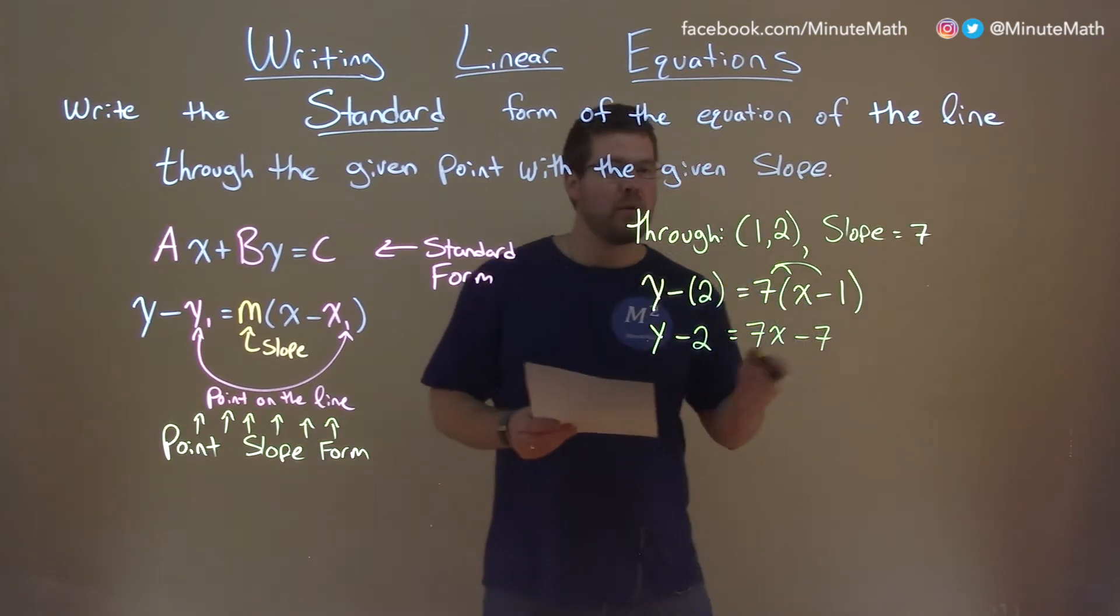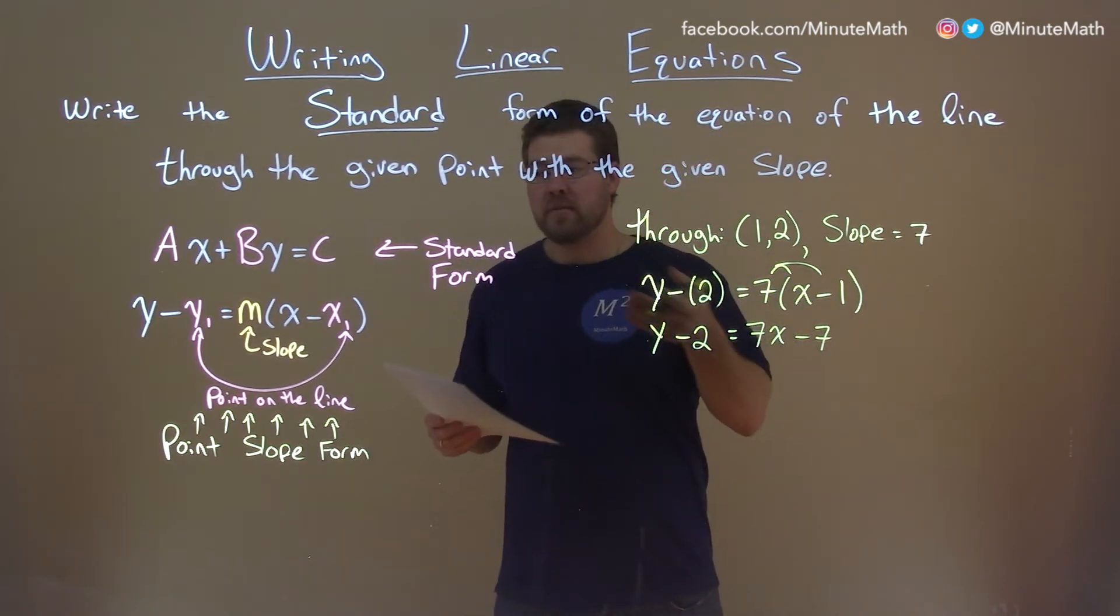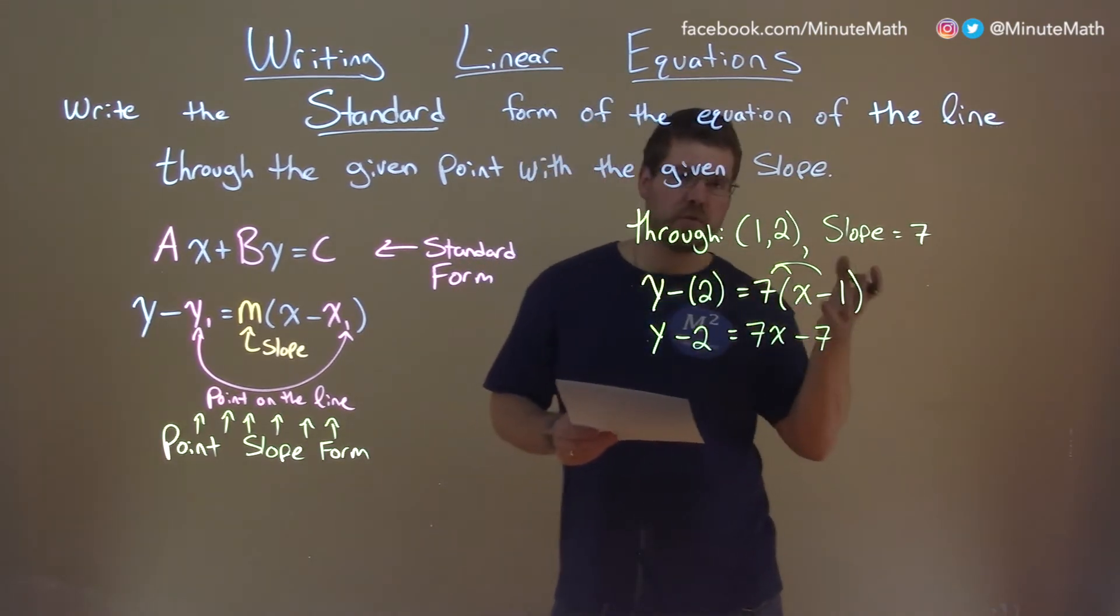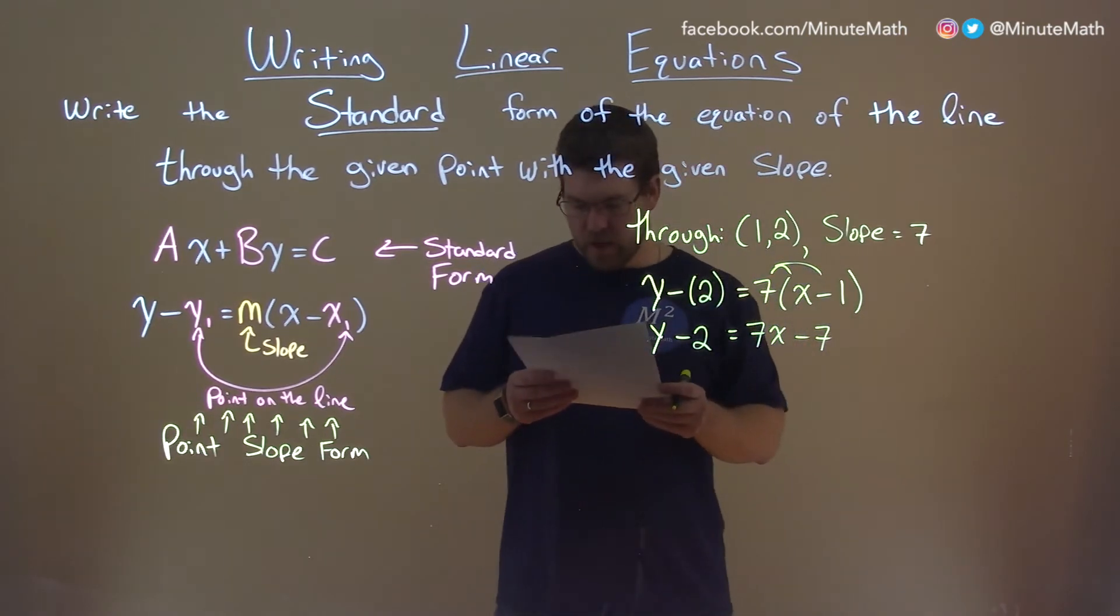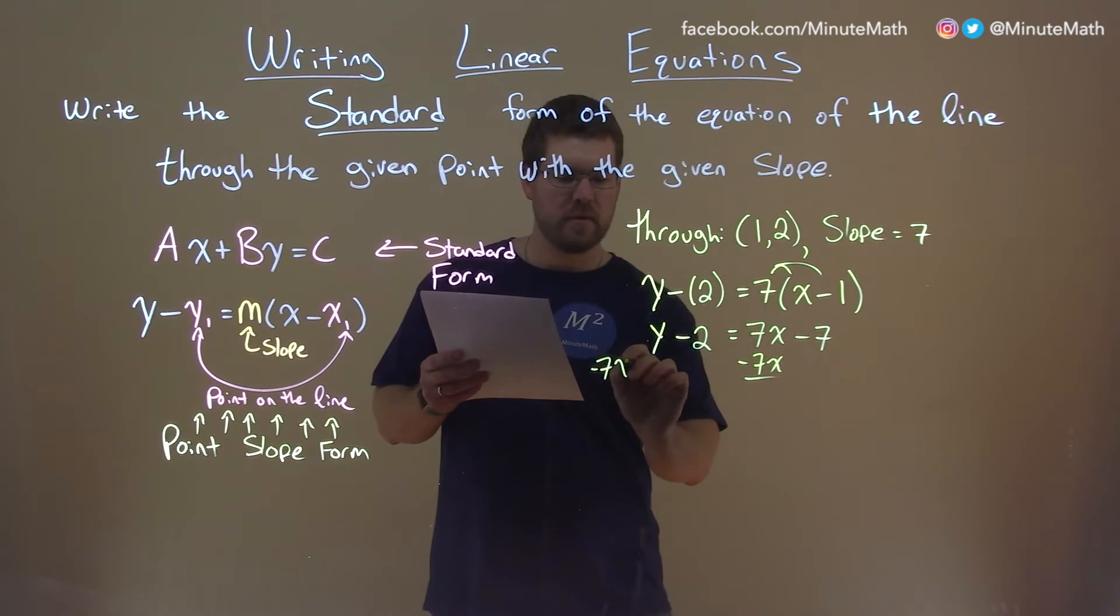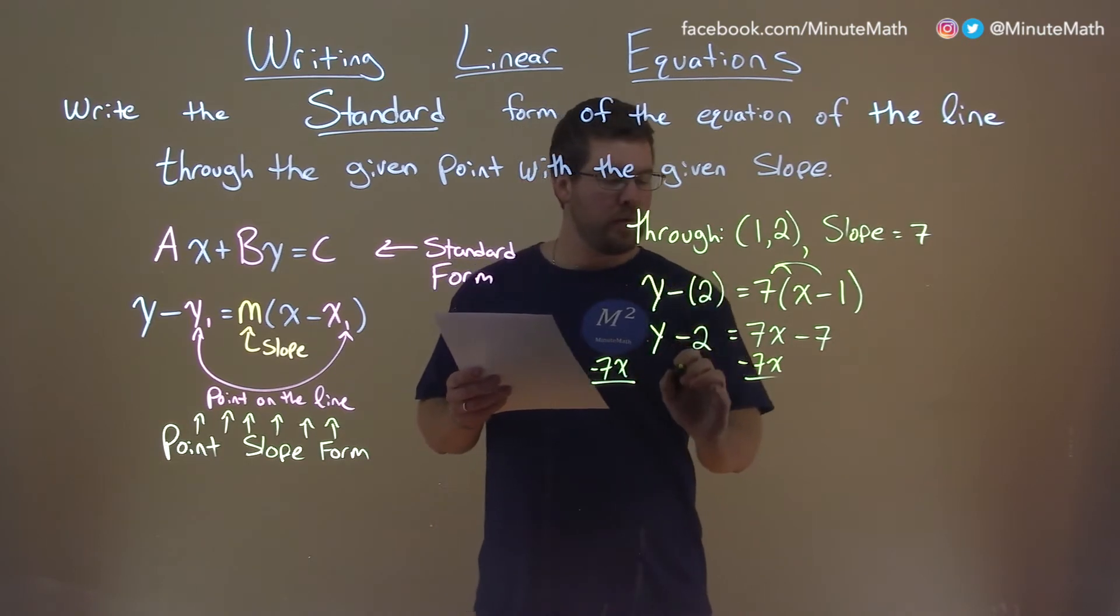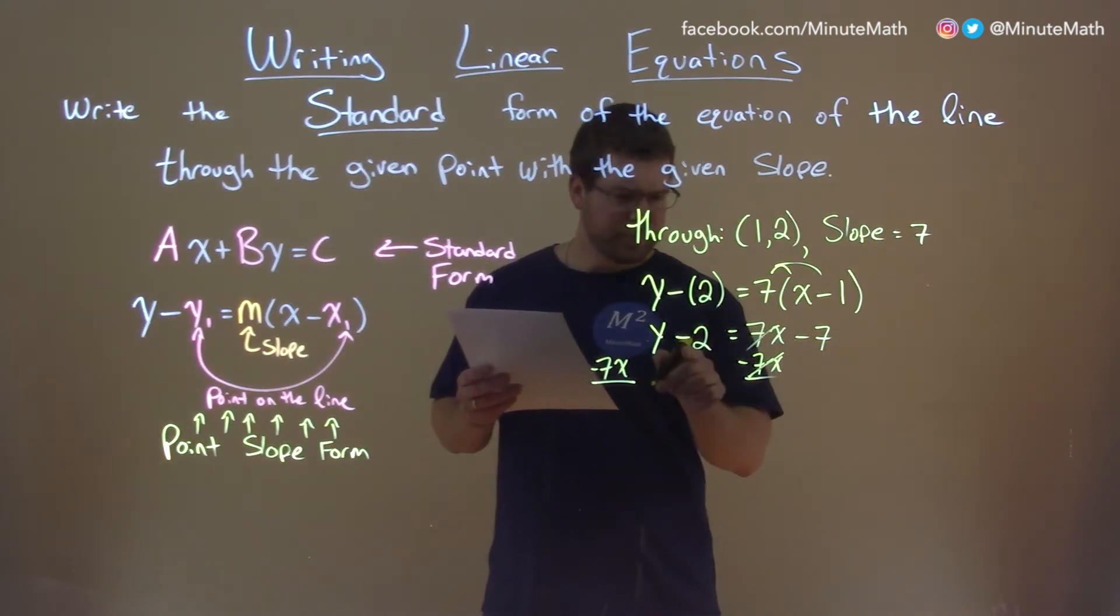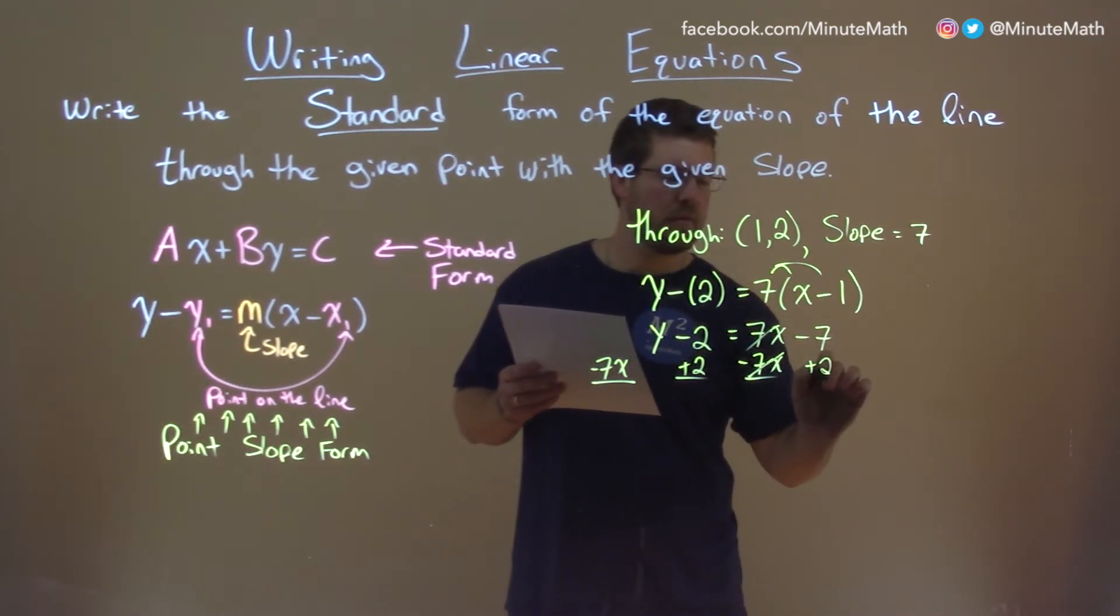Now, we want to bring all of our variables, the x and y, to left, and our numbers to the right. So, we subtract a 7x to both sides, and then what we're going to do here, that cancels that out, and then also add a 2 to both sides.